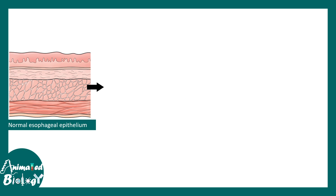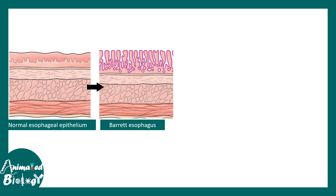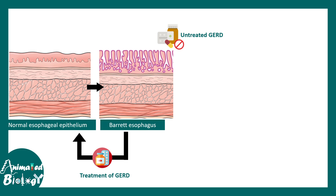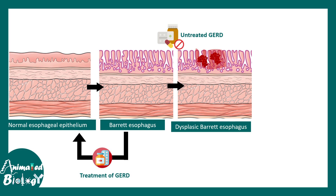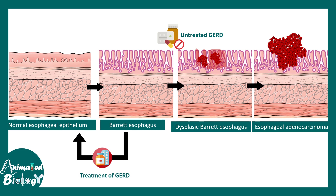As mentioned before, sometimes metaplasia can also be a trigger for cancer formation. In the Barrett's esophagus example, the normal esophageal epithelium — after repetitive acid reflux — changes into a specific cuboidal epithelium known as Barrett's esophagus. If GERD is treated properly, this change is reversible and normal epithelium would be restored. But if it is untreated and there is prolonged acid reflux, dysplasia can occur, and in dysplastic Barrett's esophagus, esophageal adenocarcinoma may develop.